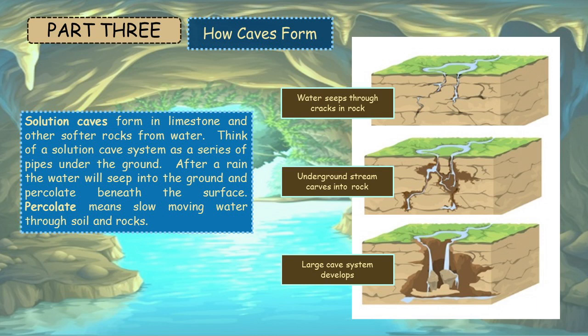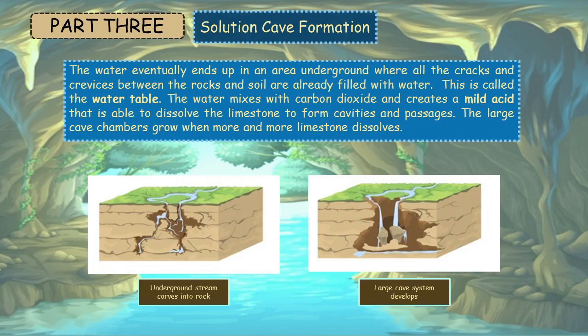Solution caves form in limestone and other softer rocks from water. Think of a solution cave as a series of pipes under the ground. After a rain, the water will seep into the ground and percolate beneath the surface. Percolate means slow-moving water through soils and rocks. The three stages are: water seeps through cracks in the rock, an underground stream carves into the rock, and then a large cave system develops. The water eventually ends up in an area underground where all the cracks and crevices between the rocks and soil are already filled with water.